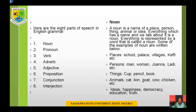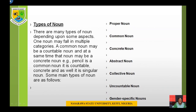Everything is represented by a word that is called a noun. Some examples of nouns: places — school, parlours, villages, cafe; persons — man, woman, Joanna, laddie; things — cup, pencil, book; animals — cats, lion, goats, cow, chicken, etc.; ideas — happiness, democracy, education, truth.